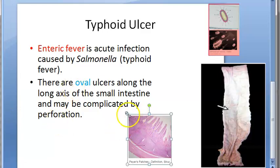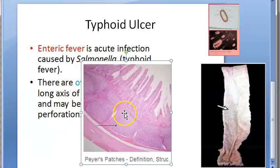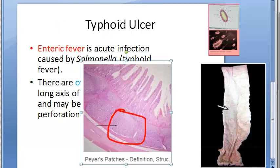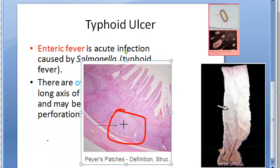You have to remember the Peyer's patches. In the ileum, you would have seen the Peyer's patches. Basically there can be oval typhoid ulcers in the Peyer's patch. The Peyer's patch shows oval typhoid ulcers along the long axis, because the Peyer's patch is lymphoid and these bacilli are localized in the intestinal lymphoid tissue.